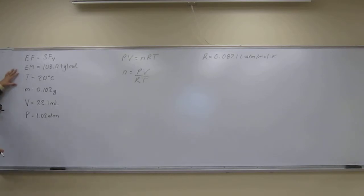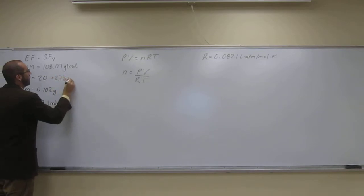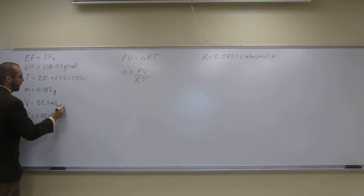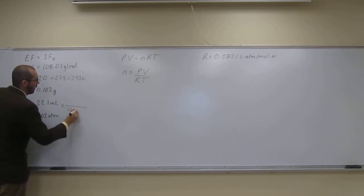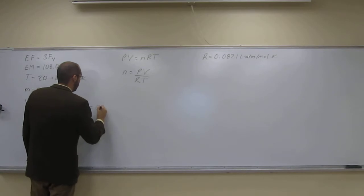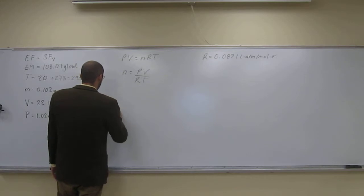But now when we look over at the values that we've been given here, T, well, that's supposed to be in Kelvin. So over here it's in Celsius, so we're going to change it to Kelvin. So 273, so that's going to be 293 Kelvin. This volume is in milliliters, so we're going to change it to liters. So 1,000 milliliters for every one liter, 0.0221 liters.